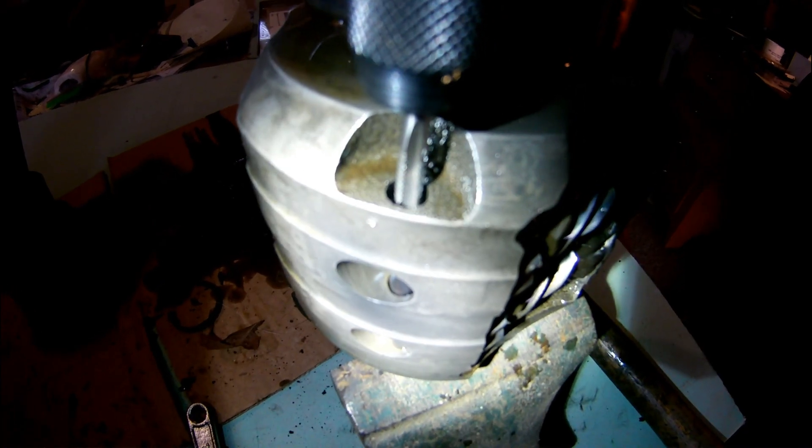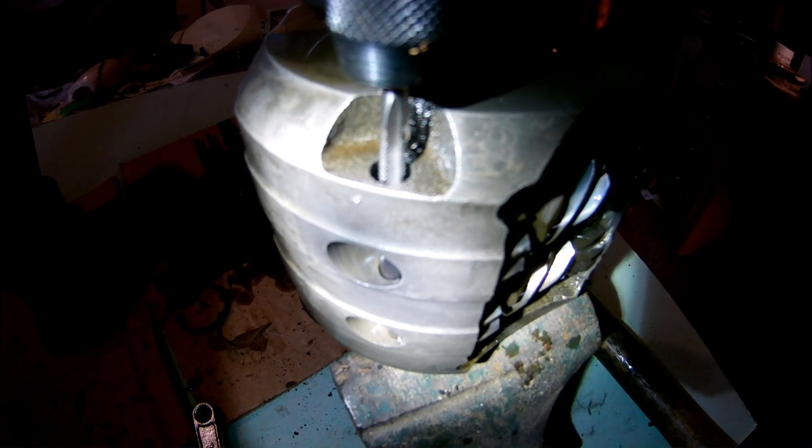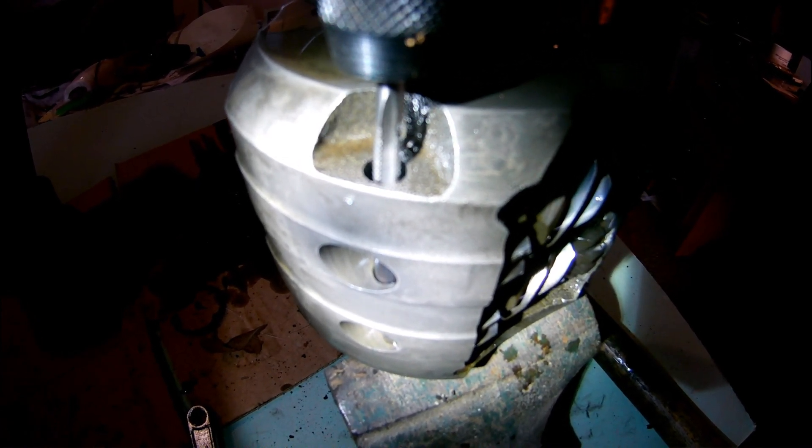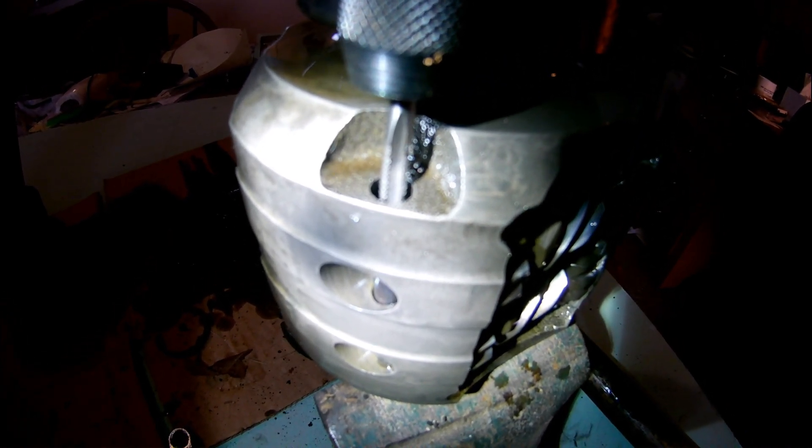So tap the spiral pins. 6-32 thread pitch. Go very slow. Back it out. Put it back in. Keep doing it. And move on to the next one.